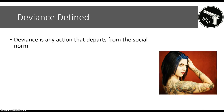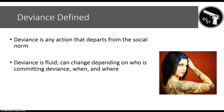Deviance is defined as any behavior or action that departs from the social norm — what is expected of you in society. The critical question we have to ask is: is the deviant label applied evenly across all social situations and all individuals? The answer is simply no. Deviance is very fluid. It can change depending on who is committing the act, where this act gets committed, and at what point in history this act is being committed.